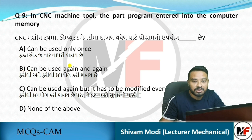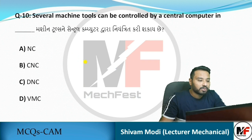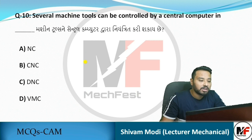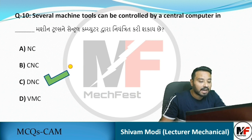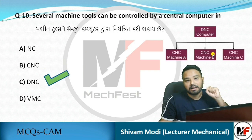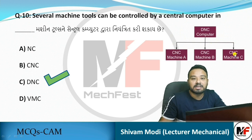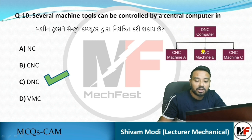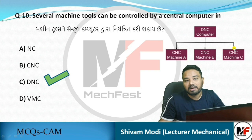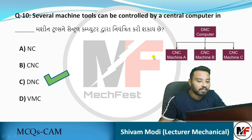Next MCQ: Several machine tools can be controlled by a central computer in which of the following systems? The answer is DNC – Direct Numerical Control. As shown in the figure, in a DNC system there is one central computer that can control all the CNC machines connected to it, with multiple different CNC machines at one location all controlled by that single computer. That is the DNC – Direct Numerical Control system.